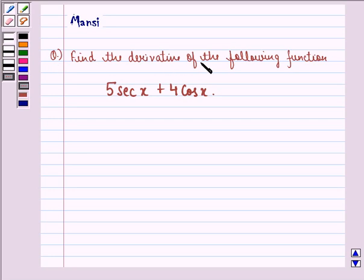The question says, find the derivative of the following function, 5 secant x plus 4 cos x. Let us see the solution behind the question.